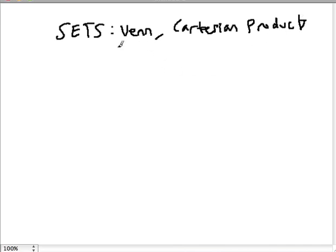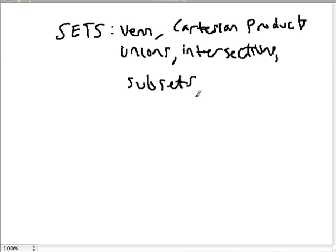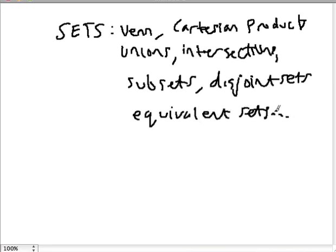The way this test is broken down: we have to look at sets. Think of stuff like Venn diagrams, Cartesian products, unions, intersections, subsets, disjoint sets, and equivalent sets. The list goes on. That's a small portion of the test. Another portion is the logic section.